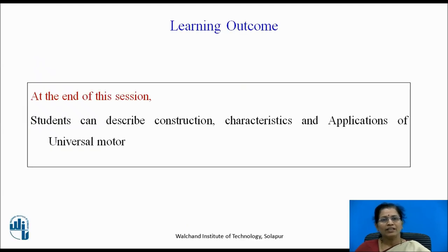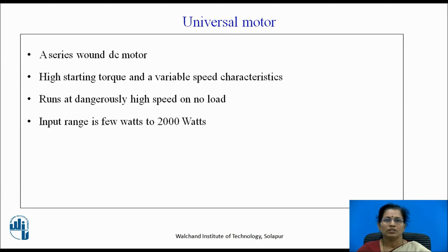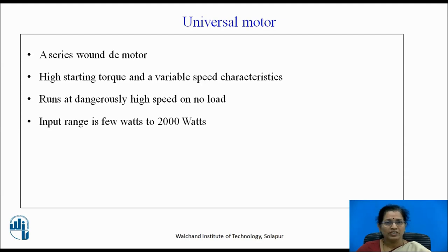At the end of this session, students can describe construction, characteristics, and application of universal motor. Universal motor is a series-wound DC motor having high starting torque and variable speed characteristics. It runs at dangerously high speed on no load, and the input range is few watts to 2000 watts.